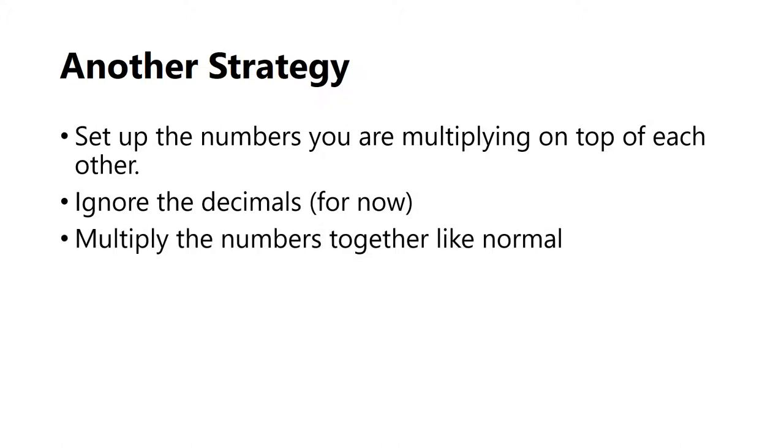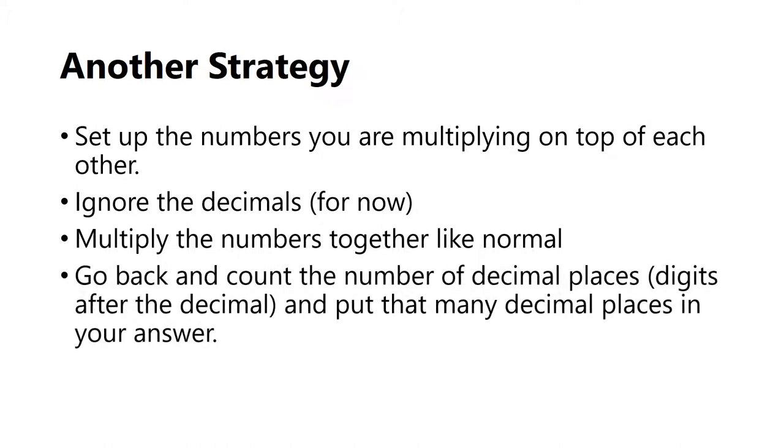Then we're going to ignore the decimals altogether for now and multiply those numbers together like we normally would. Then at the end, we're going to count the number of decimal places in the question and put that many decimal places in the answer. You'll see this in the examples. Let's try that strategy out.